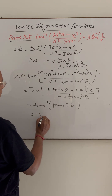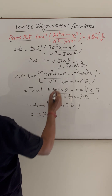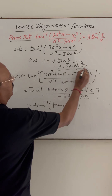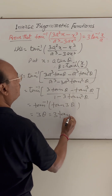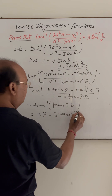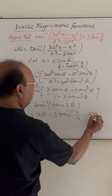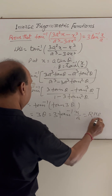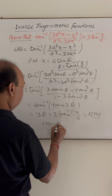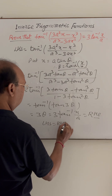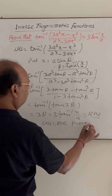And 3θ is equal to 3·tan inverse of x by a, which is the right hand side. So we have shown that left hand side equals right hand side, and hence it has been proved.